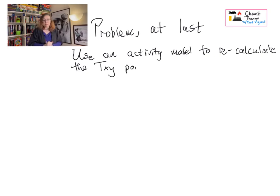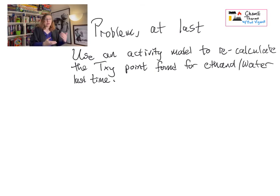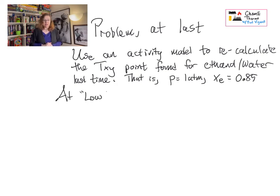So, our problem for today is to use an activity model, and we're going to recalculate that calculation we did just the other day, where we figured out the boiling point for a liquid mixture of ethanol and water that was 0.85 mole fraction ethanol. Now, when we did this before, we were assuming that we were using an ideal solution. And I'm just telling you, just going to make the case right now and right here, that in fact is not an ideal solution. That's not a good assumption in this case.